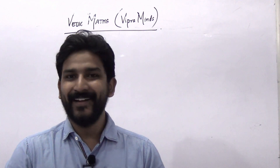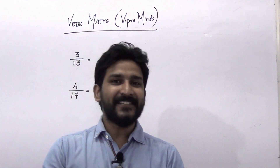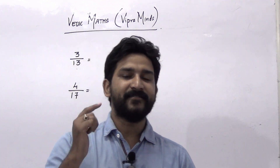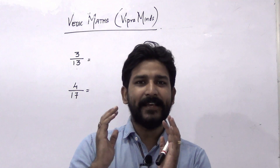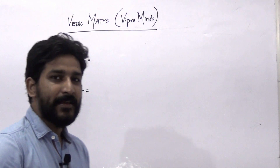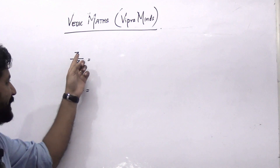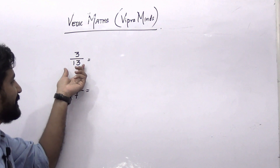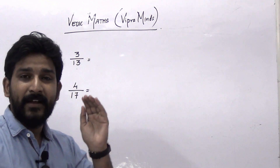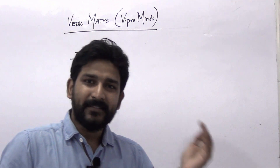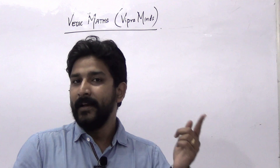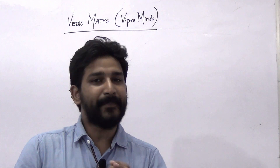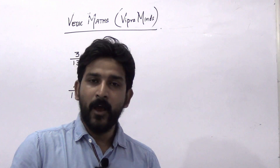Hello, welcome to Vipramind's channel. In the last session we have seen how to divide any number when the divisor ends with 9. So using that same concept we are going to see examples such that the divisor can be converted to end with 9, and once it ends with 9 we can use the same method that we have seen in the previous video.